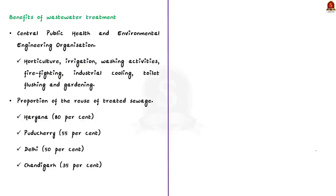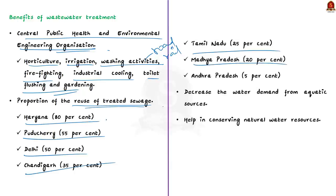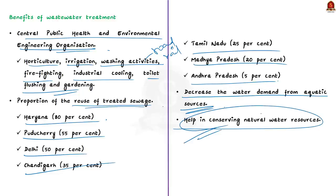Treating wastewater has its own benefits. According to the Central Public Health and Environmental Engineering Organization, treated sewage water can be reused for horticulture, irrigation, washing activities, firefighting, industrial cooling, toilet flushing and gardening. The proportion of reuse of treated sewage is maximum in Haryana at 80%, followed by Puducherry, Delhi, Chandigarh, Tamil Nadu, Madhya Pradesh and Andhra Pradesh. The reuse of treated sewage can decrease water demand from aquatic sources like rivers, ponds and lakes, as well as groundwater sources, helping conserve natural water resources according to the CPCB report.